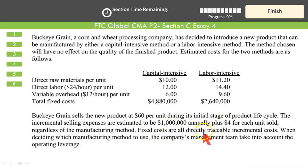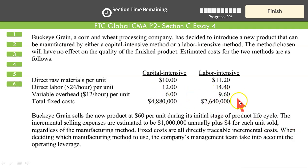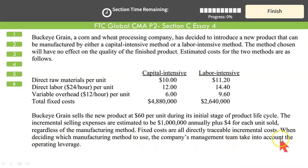Fixed costs are all directly traceable, incremental costs, which means all the fixed costs must be considered — they are related to these two methods. So when deciding which manufacturing method to use, the company management team must take into account the operating leverage.